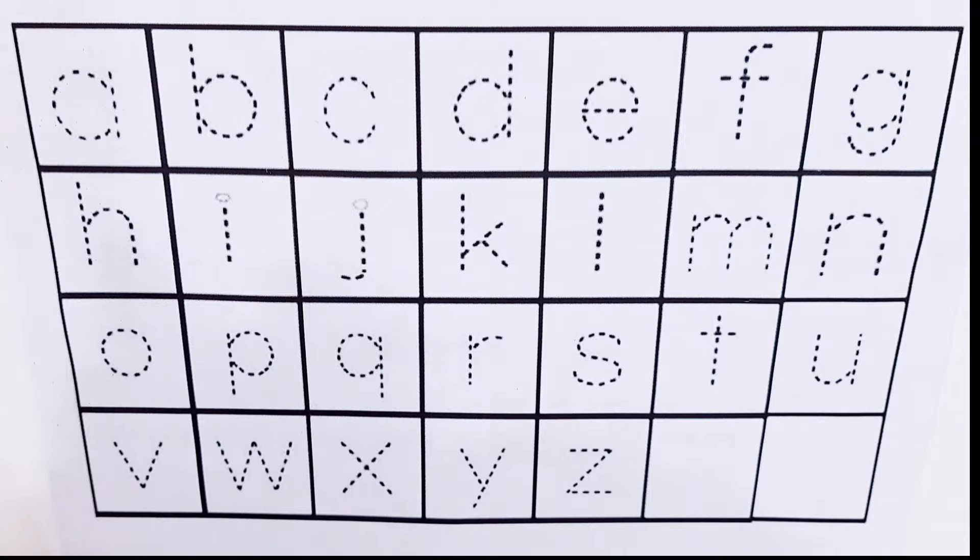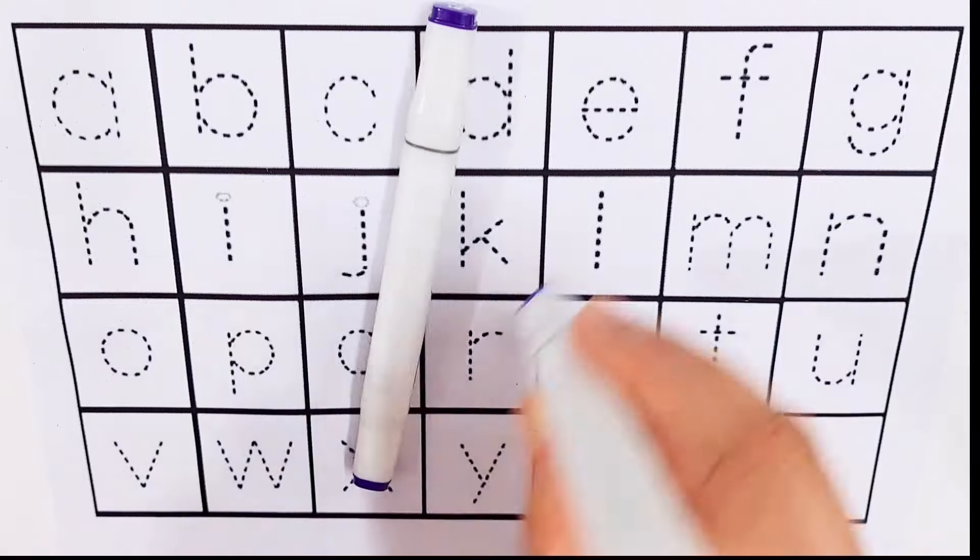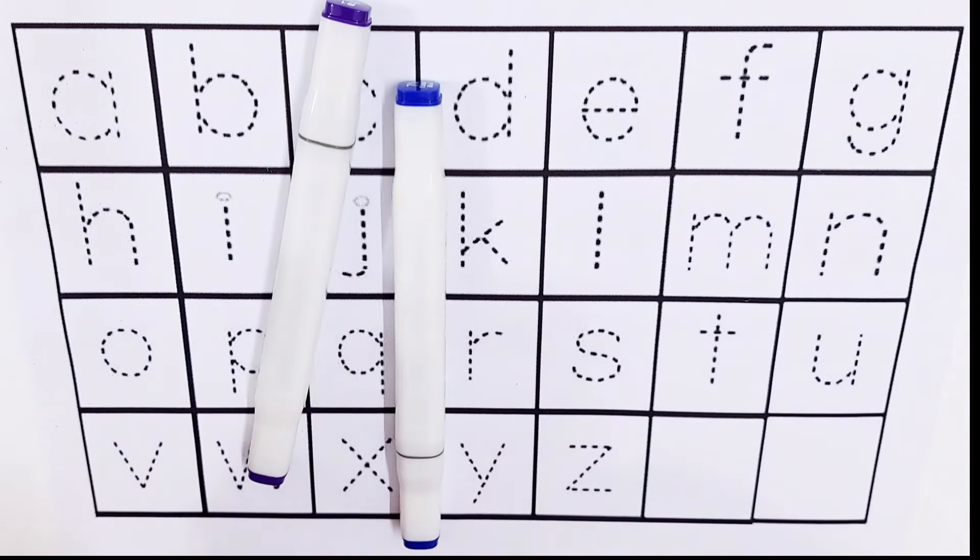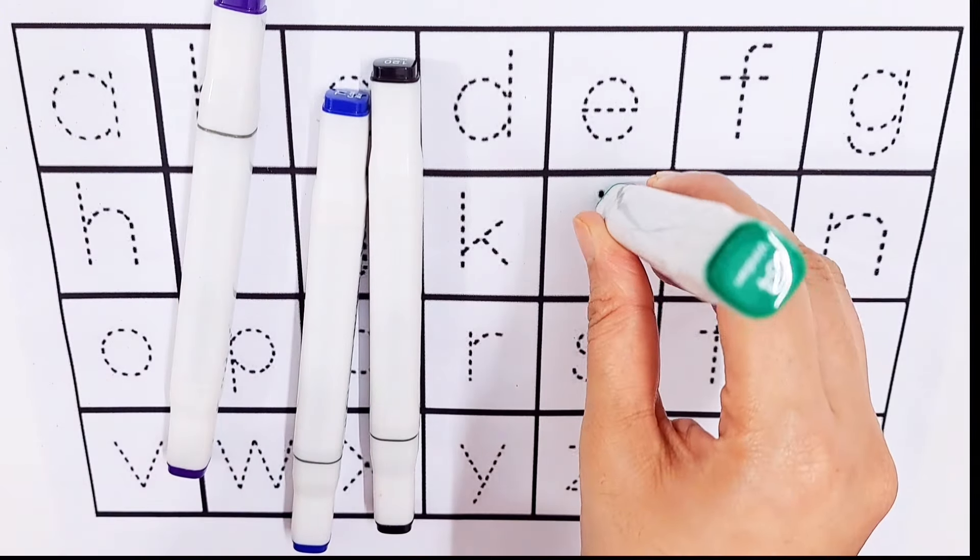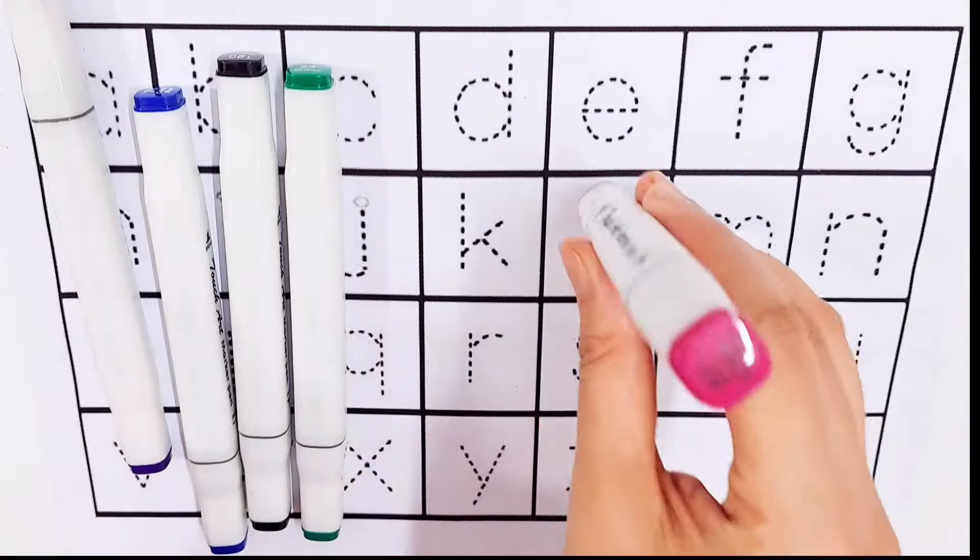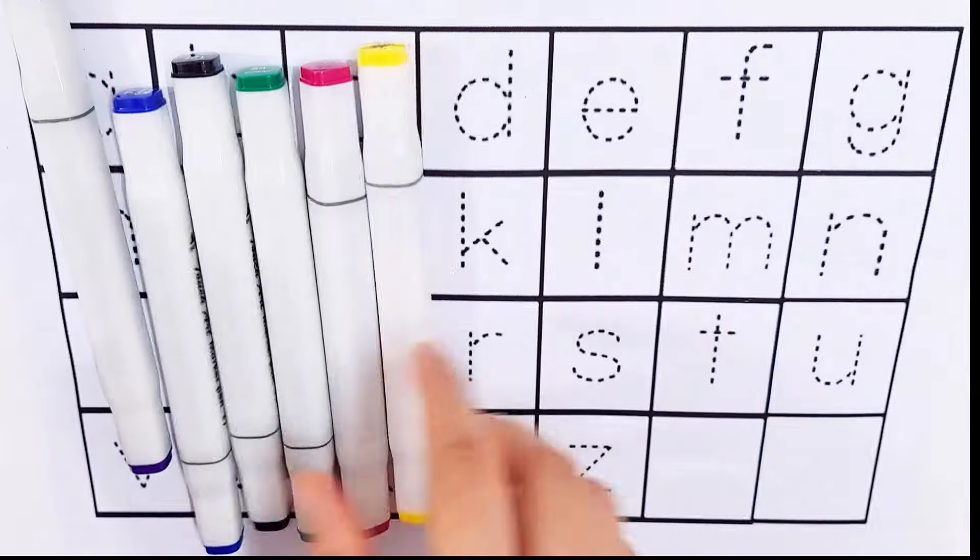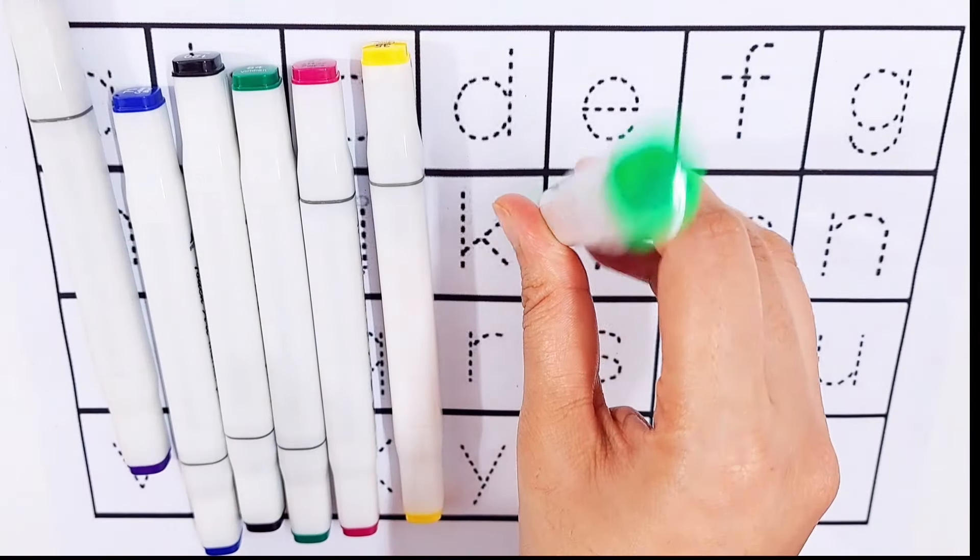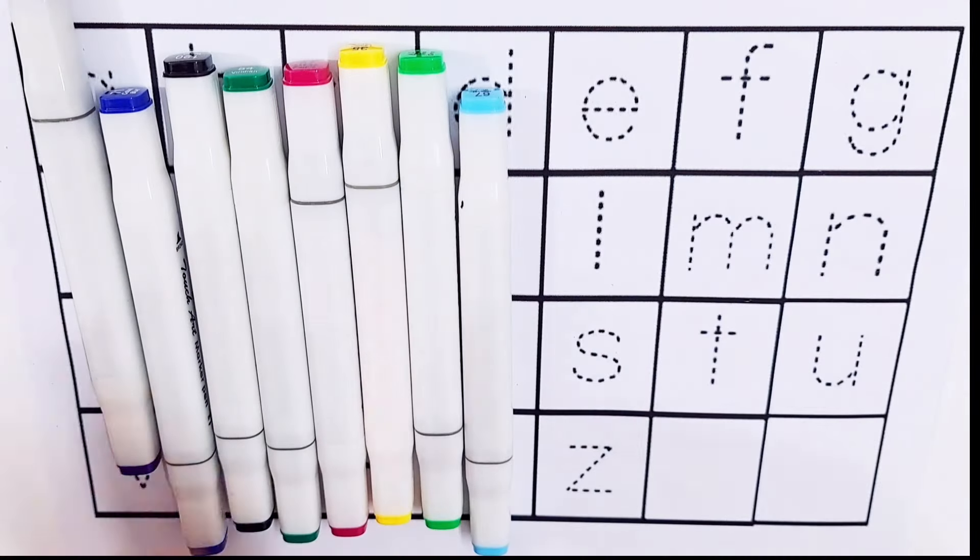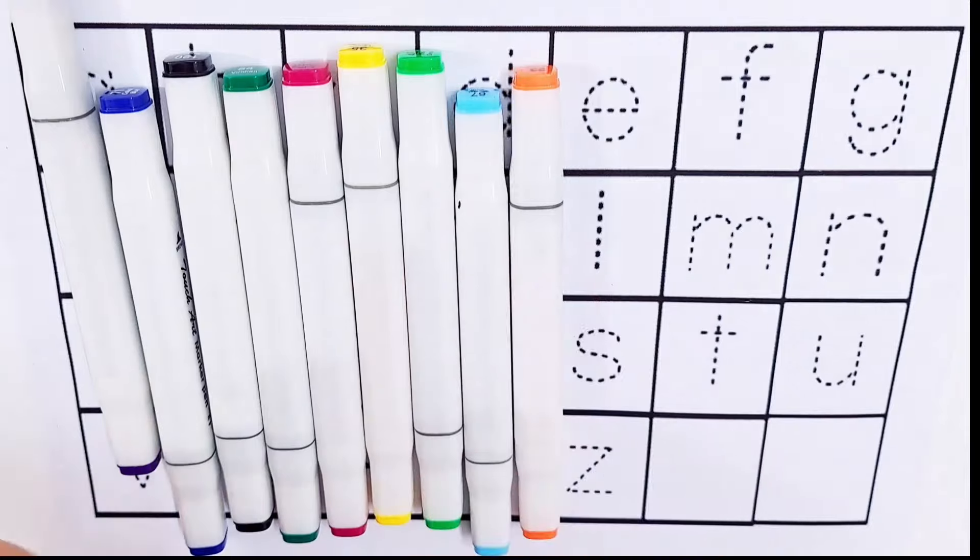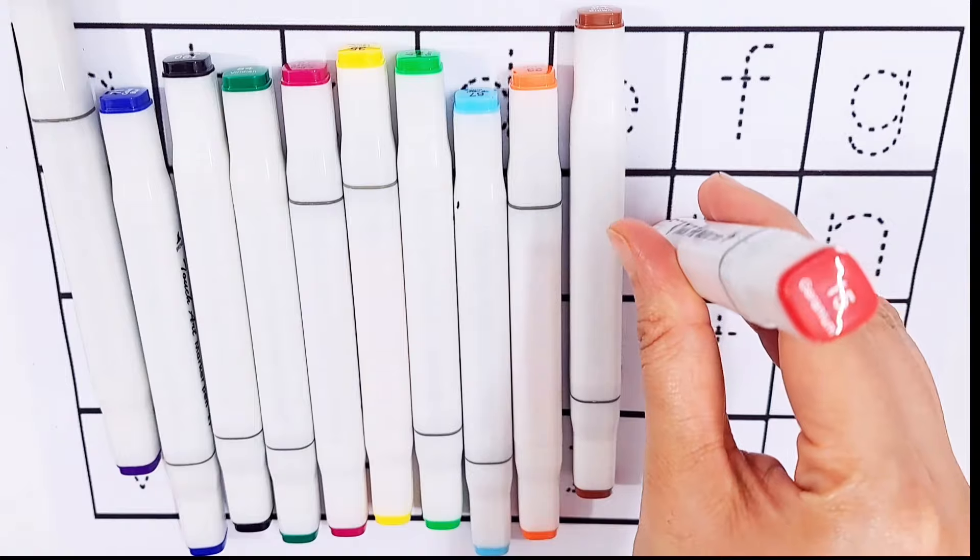Hello guys. Let's learn some colors name. Violet color, dark blue color, black color, dark green color, purple color, yellow color, light green color, sky blue color, orange color, brown color, red color.